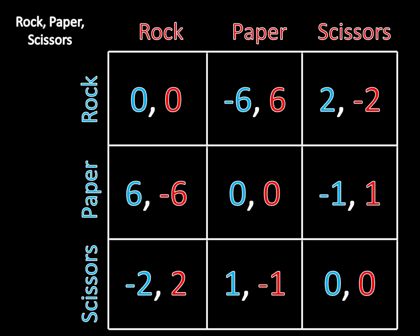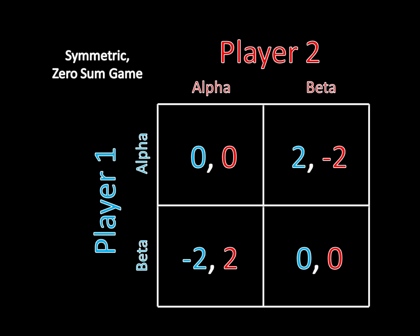You can see a simpler example if we just look at a two-by-two game. In this symmetric zero-sum game, the players have the same strategies, alpha and beta, and they have the same symmetric payoffs. If they both play alpha, they both get zero. If they both play beta, they both get zero. And if one player plays alpha and the other plays beta, the alpha player gets two and the beta player gets negative two.